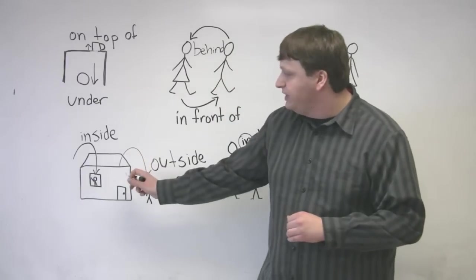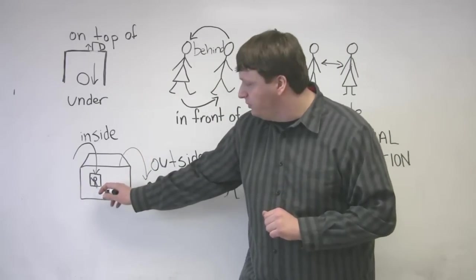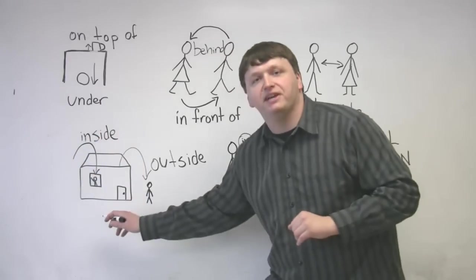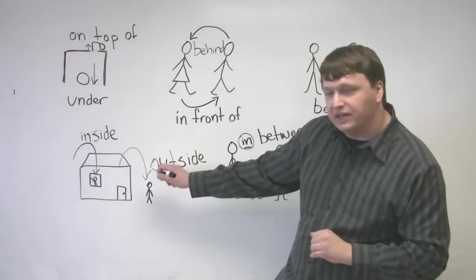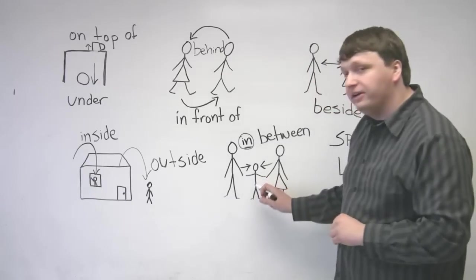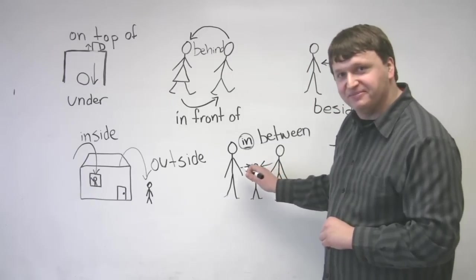Here, we have two people in a house. This person, looking through the window, waving at us, is inside the house. This person is outside the house. And the child, David, is between the parents.